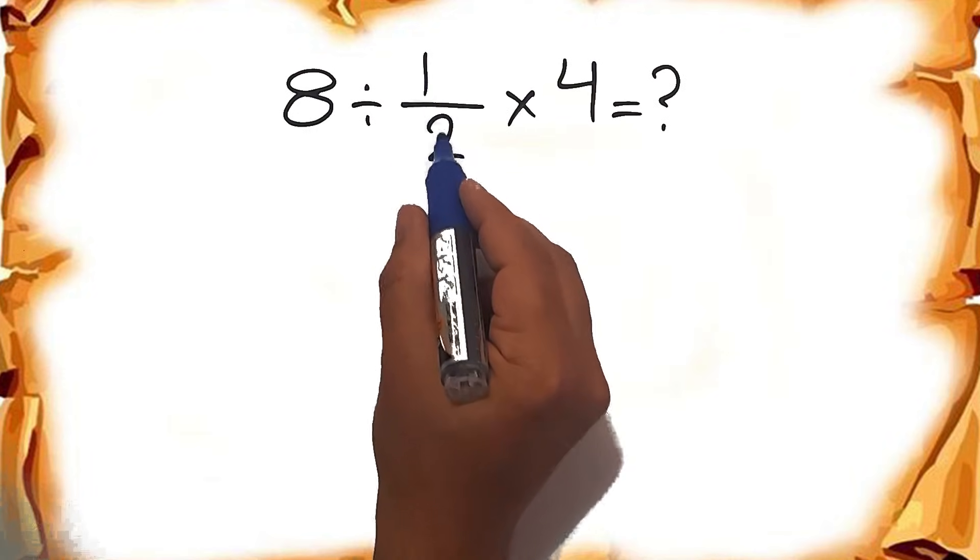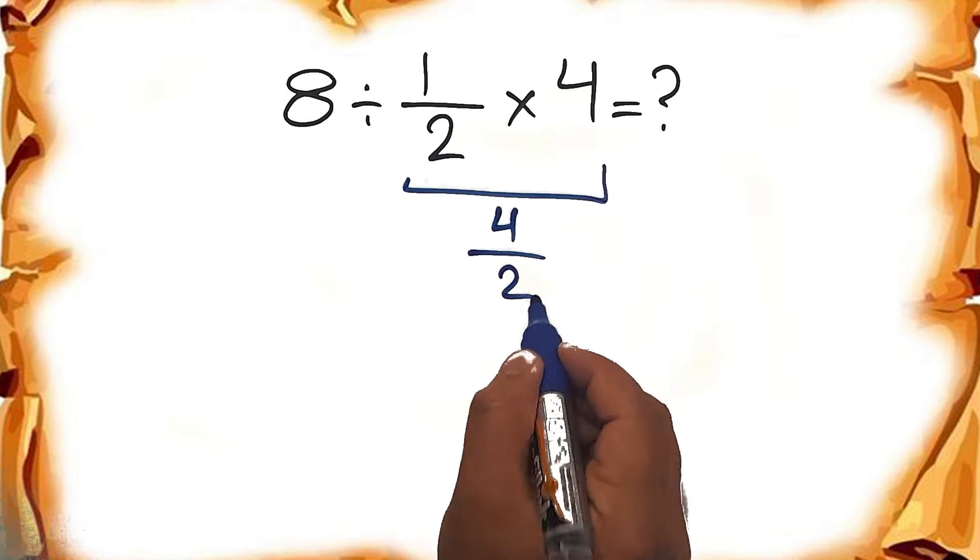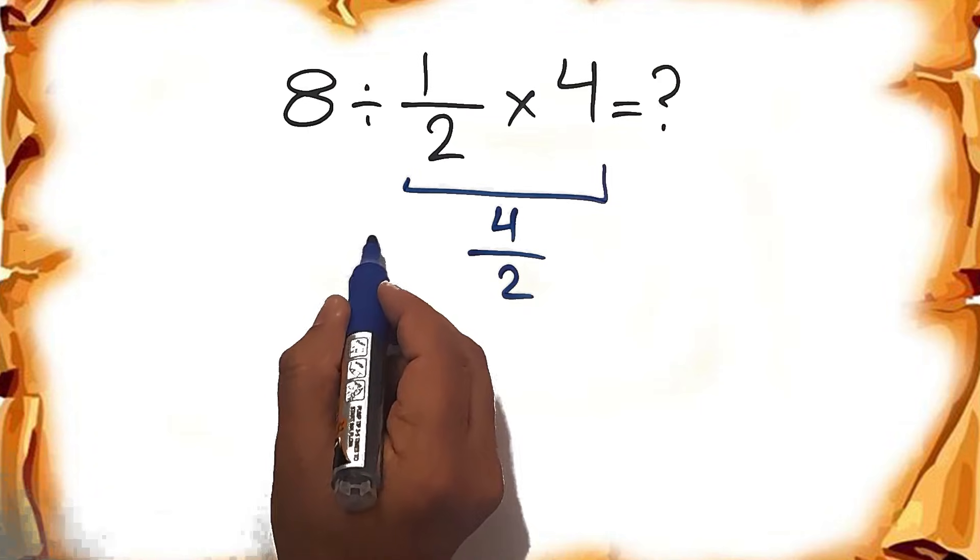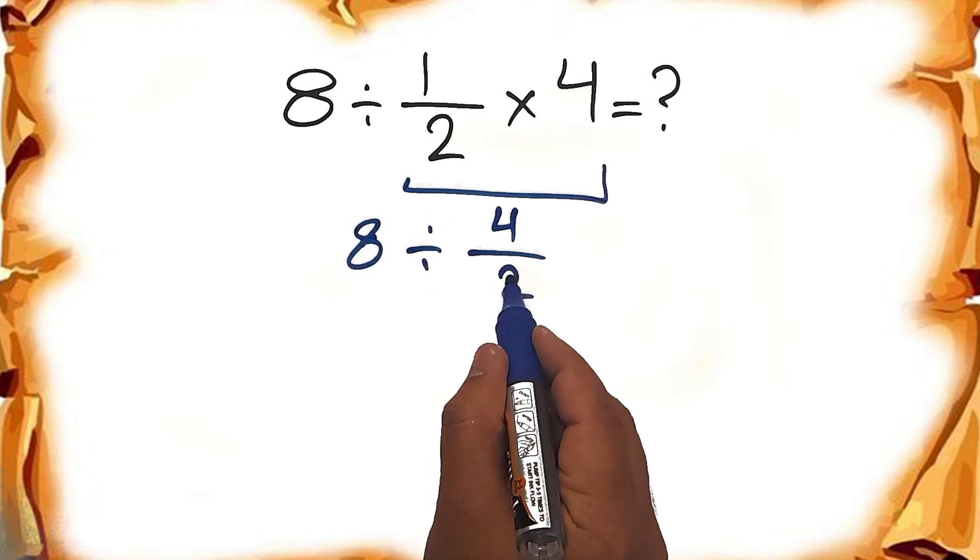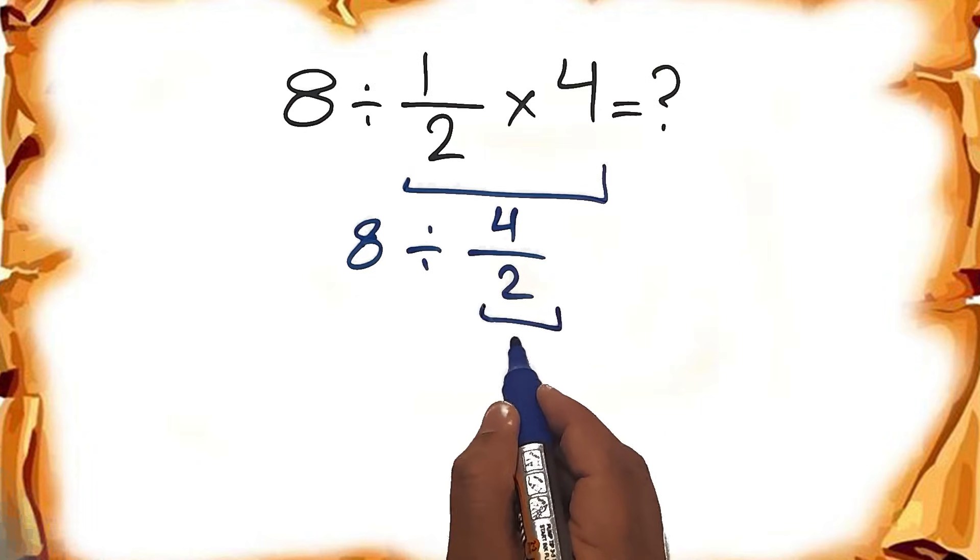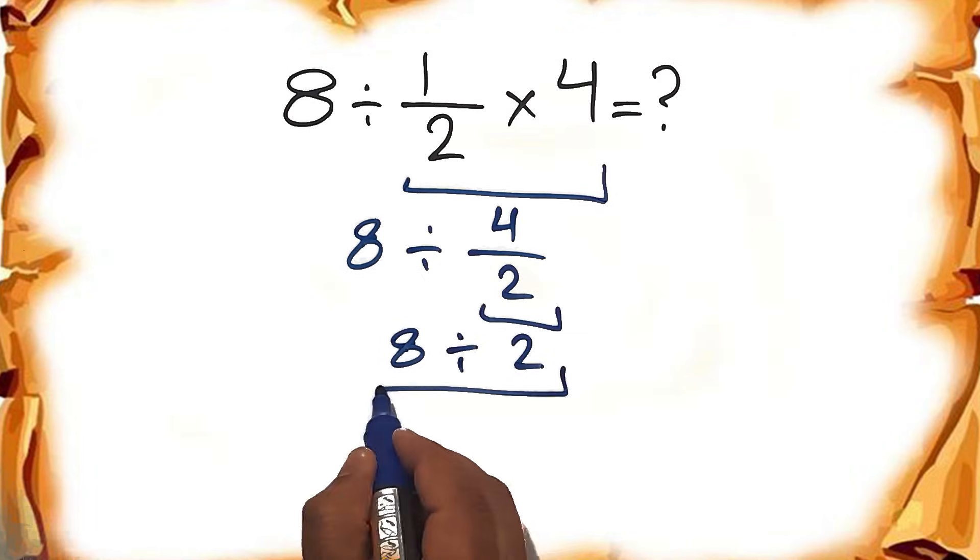1 over 2 times 4 equals 4 divided by 2. We have here 8 divided by this fraction. 4 divided by 2 equals just 2. So 8 divided by 2 which equals 4.